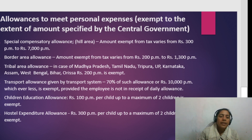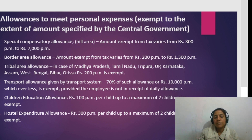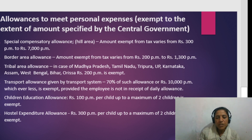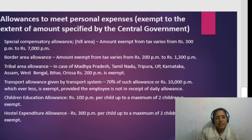Allowances to meet personal expenses: the government specifies a fixed exempt amount; any amount above the specified limit is taxable. The first example under this category is Special Compensatory Allowance.